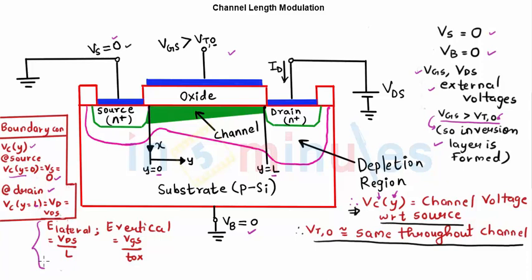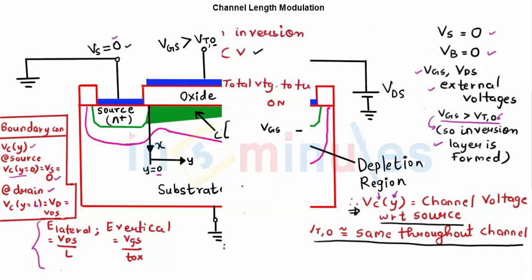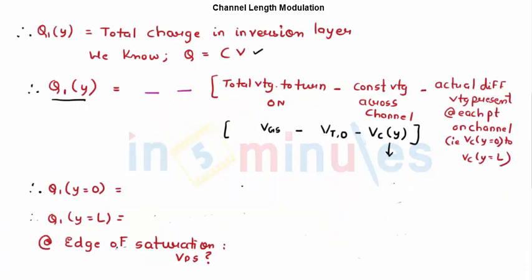And the last thing which we need to keep in mind is there are two electric fields in a MOSFET. One is this lateral electric field which is given by VDS by the length of the channel. Another one is a vertical one which is given by VGS by thickness oxide.